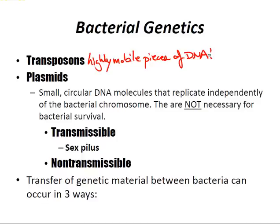A plasmid is a small circular DNA molecule that replicates independently of the bacterial chromosome. Importantly, plasmids are not necessary for bacterial survival. Transmissible plasmids can be transferred from one bacterium to another via conjugation — these plasmids contain the genes necessary for the synthesis of the sex pilus.